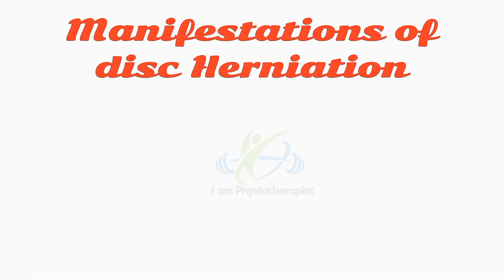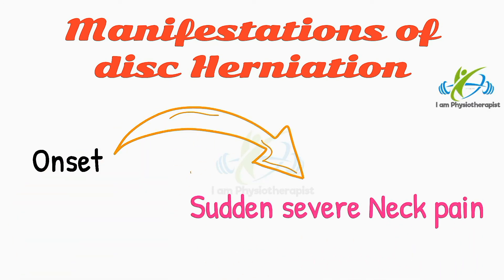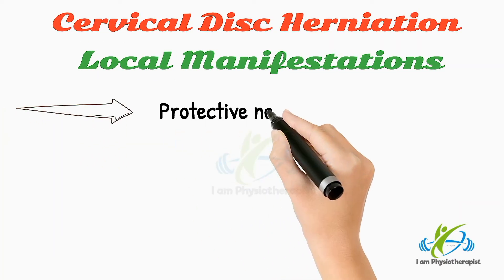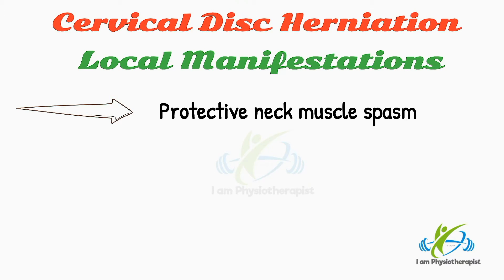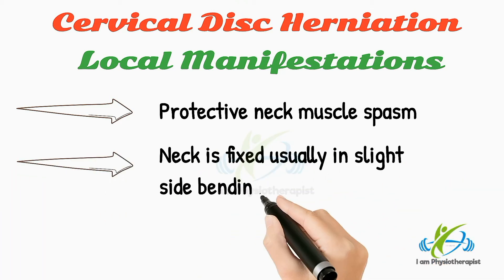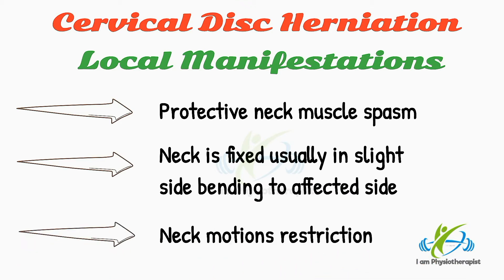Manifestations of Disc Herniation. Onset is sudden severe neck pain. Local manifestations: clinically the patient presents with protective neck muscle spasm. The neck is fixed and usually in slight side bending to the affected side due to muscle spasm. All neck motions including active and passive, especially ipsilateral rotation, are restricted.